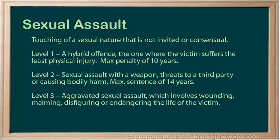Level two is sexual assault with a weapon, threats to a third party, or causing bodily harm — this basically involves weapons, threats, or physical injury, and carries a maximum sentence of fourteen years. Level three is aggravated sexual assault, which involves wounding, maiming, disfiguring, or endangering the life of the victim.